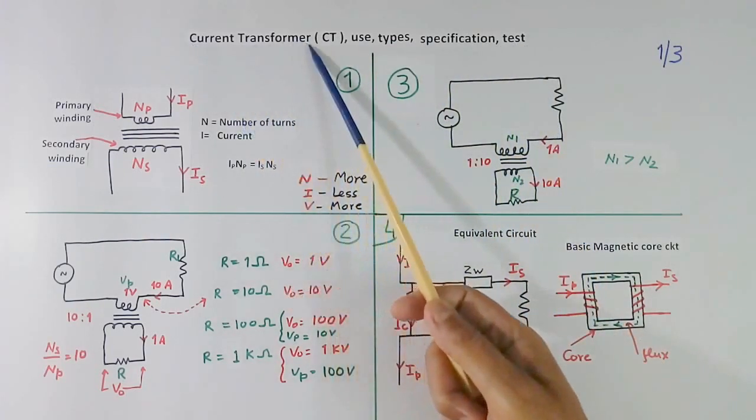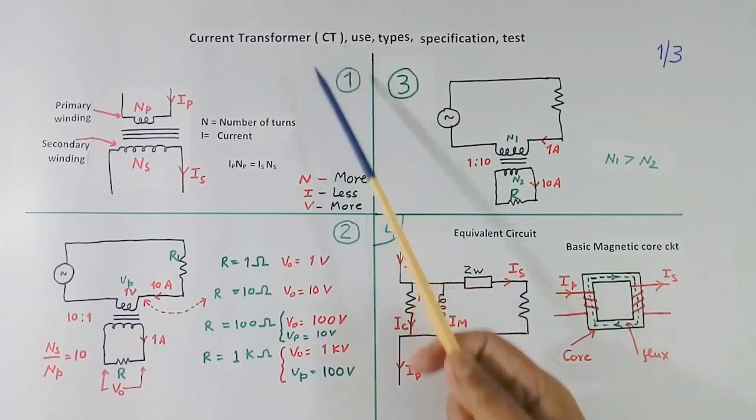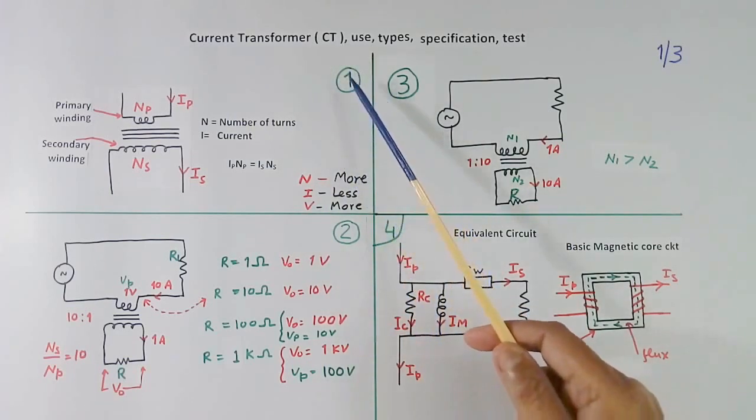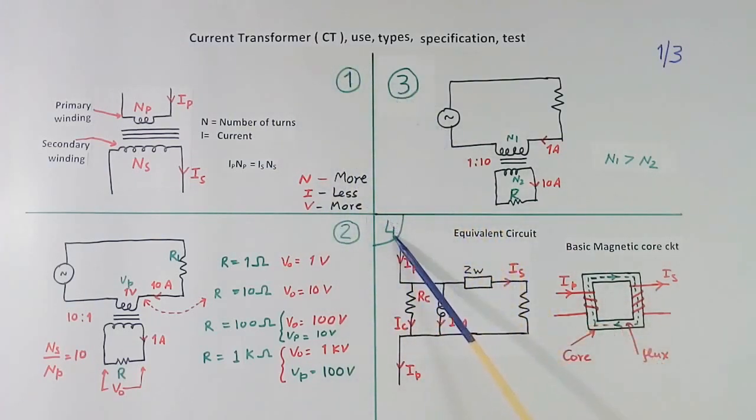Current transformer is also called CT. You are seeing 1, 2, 3, 4. I have total 11 diagrams and total 3 sheets. This is 1 of 3.